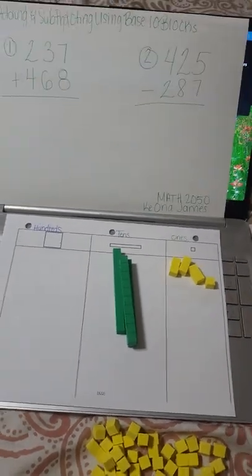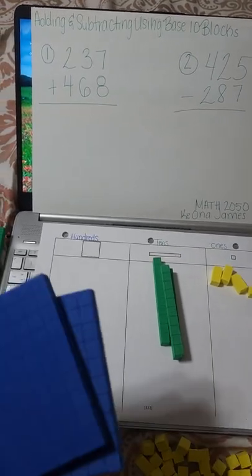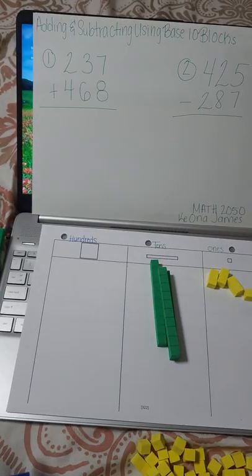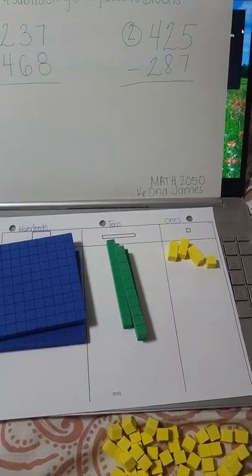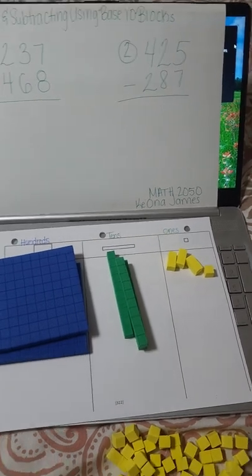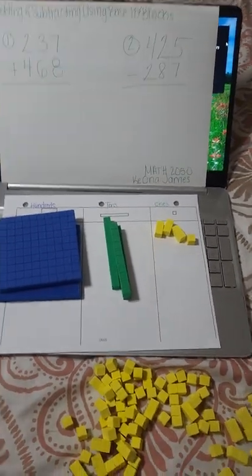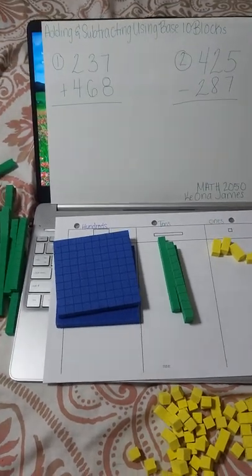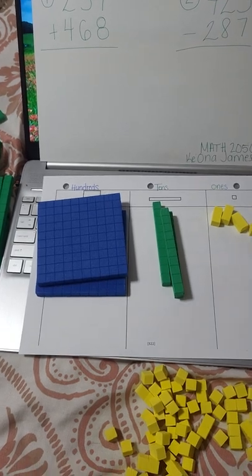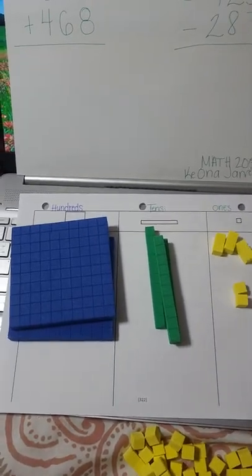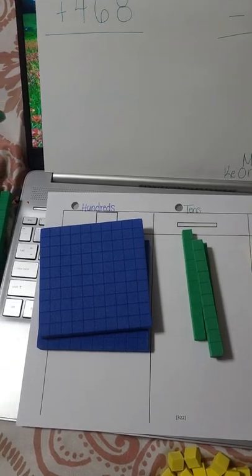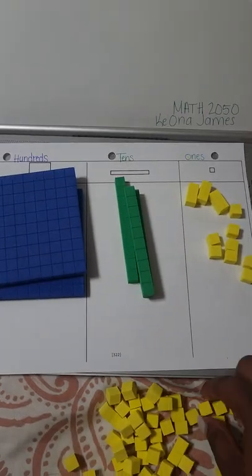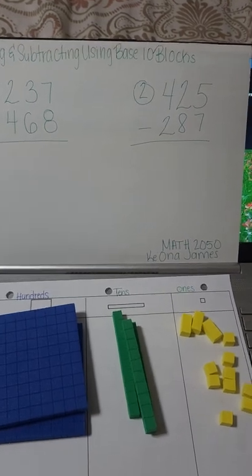Next, you notice that we have two hundreds, so we have our 200 units — we're going to go ahead and place those in our hundreds section. Now we're going to add 468, so we need to add eight units in our ones: two, five, six, seven — and eight. Next we need to add six tens in that place.